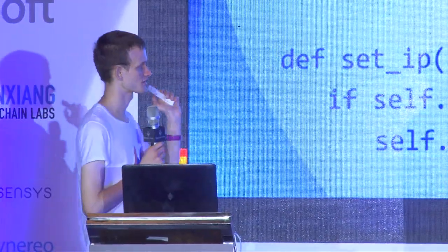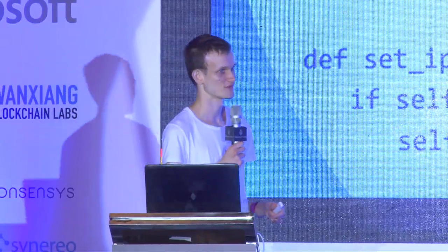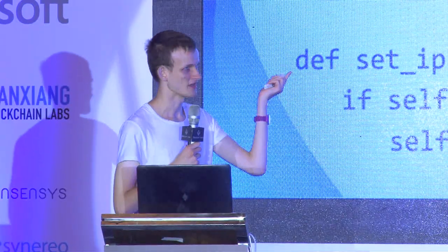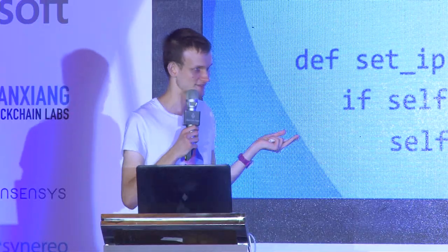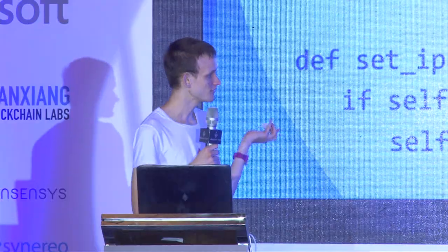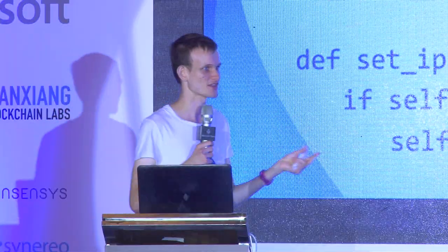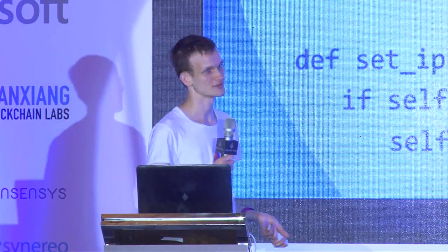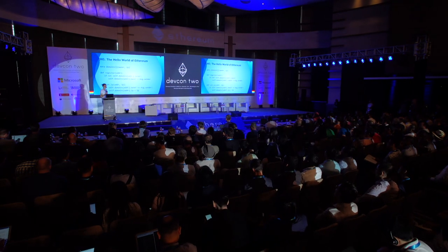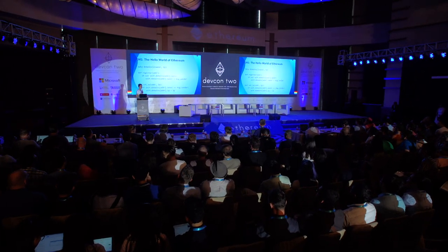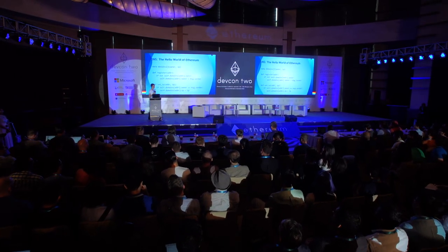The hello world of Ethereum is a minimal DNS system. The idea is you want to store a mapping of domains — like Vitalik.eth, George.eth, Ethereum.eth — and for each one, store the IP address it points to and who owns that domain. We have two functions: one for registering a domain (if the domain hasn't been registered, set the owner to yourself), and another to set the IP address if you own the domain. Nick Johnson will be presenting a more complete version, but this is the kernel.